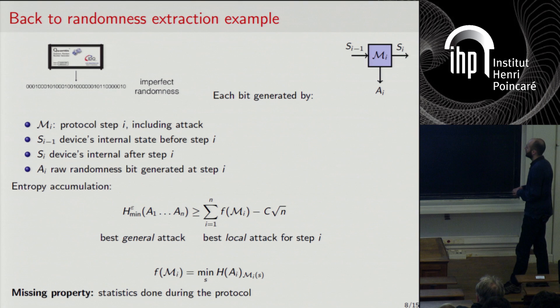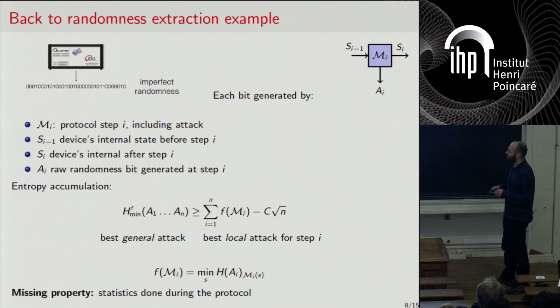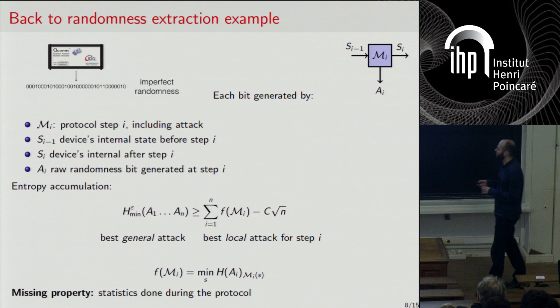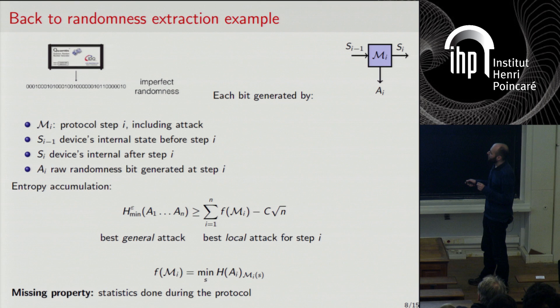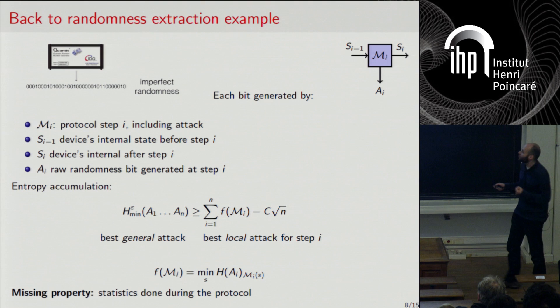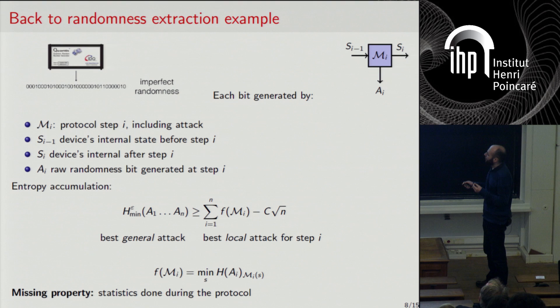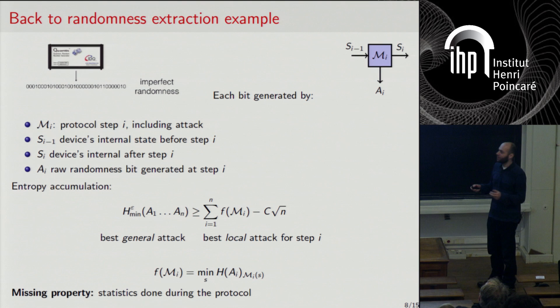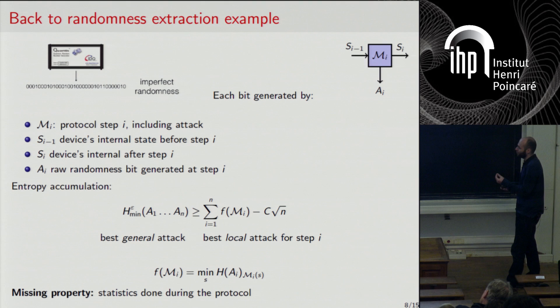Now I want to advertise another important property of the result. In general, when you analyze a cryptographic protocol, there are some statistics you observe on the running of the device. For example, in quantum key distribution you have a step where you check there was no eavesdropping. These are the statistics I want to include. The model now has the device also outputting W_i at each step — these W_i's are some statistics you can observe on the running of the device.